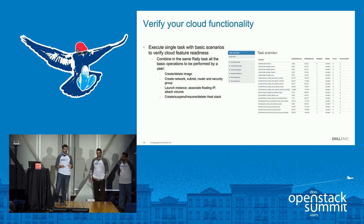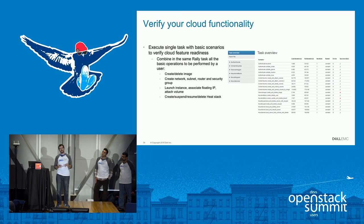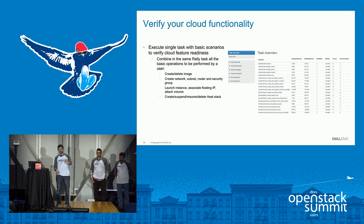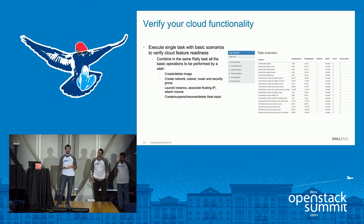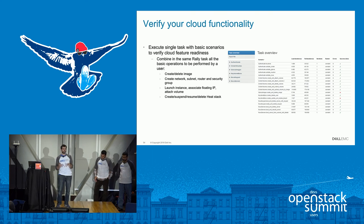The second use case is verifying your cloud functionality. Every time you deploy an OpenStack cloud or do an update, you want to make sure your cloud is still fully functional. With Rally you can create a task that contains many of the typical scenarios a user would execute — create users, tenants, networks, routers, subnets, instances, and all those things. Rally will provide you with an output, which you can see on the right, giving you a checklist of all the things done and whether they were successful — a single pane of glass to see how your cloud is behaving and if it has all the features it was designed for.